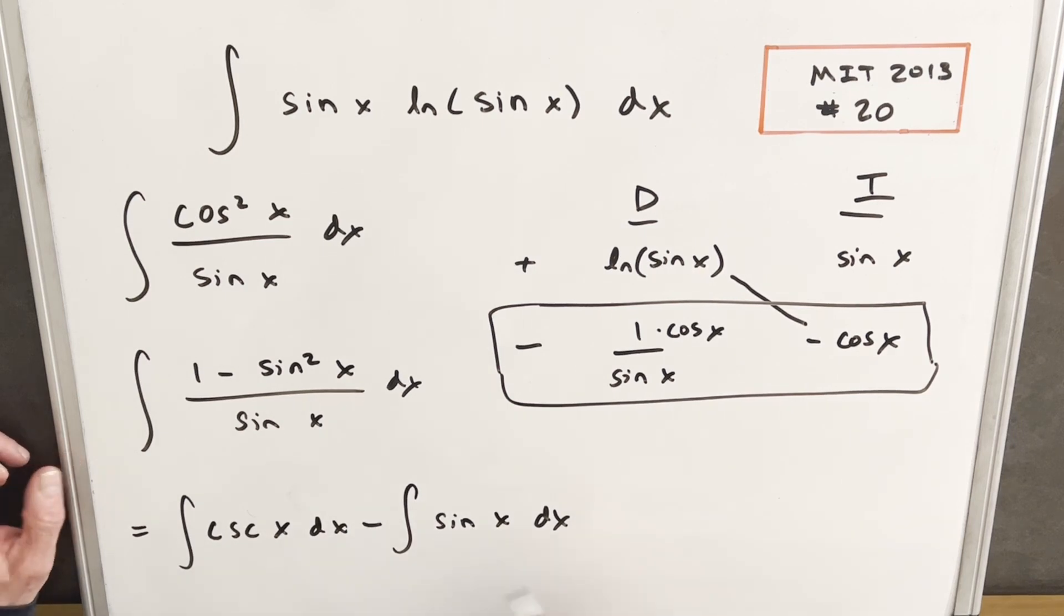So first, I'm going to integrate cosecant x. And that's just going to be natural log cosecant x minus cotangent x, absolute value. So then we'll have minus the integral of sine x, which is just minus cosine x.